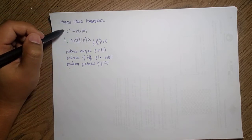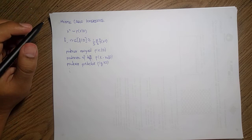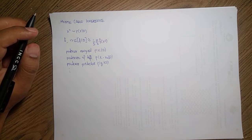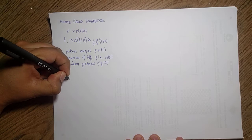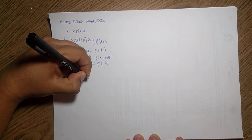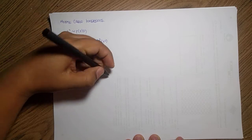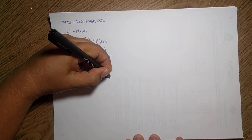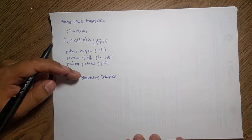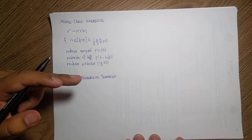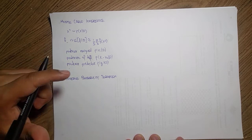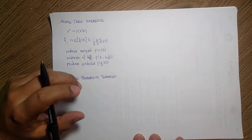Now the question is how do you perform this sampling. The most common method is the Inverse Probability Transform. The whole idea is to use the CDF of your distribution and reconstruct — going back from a uniform distribution through the CDF to your original distribution.